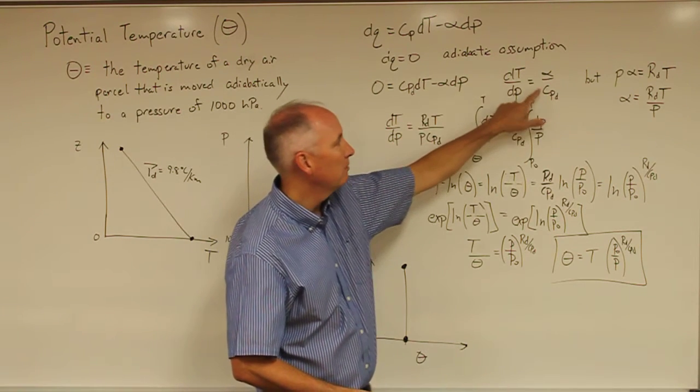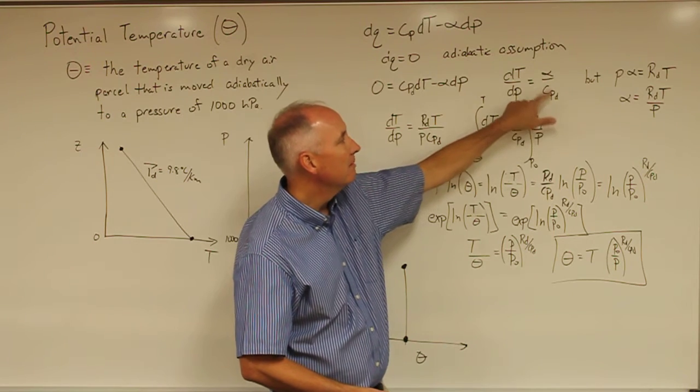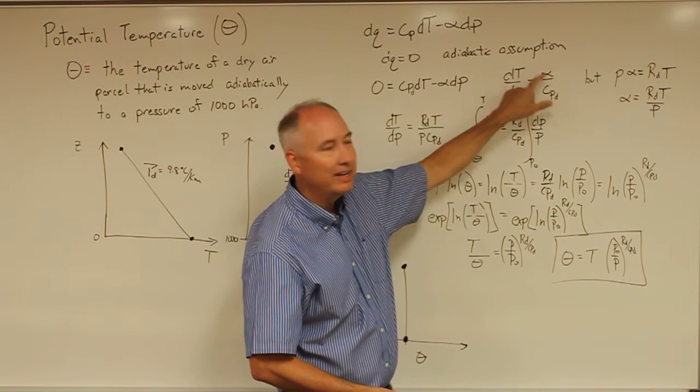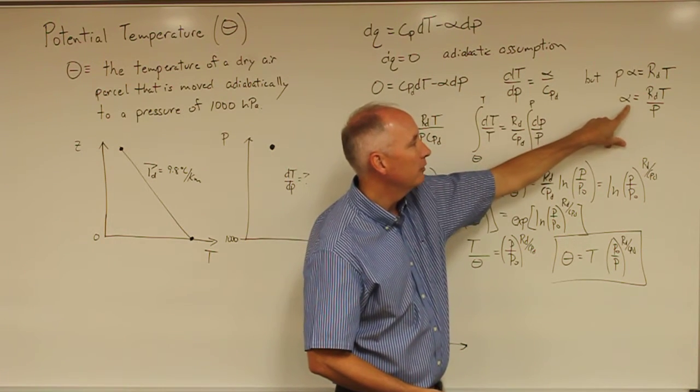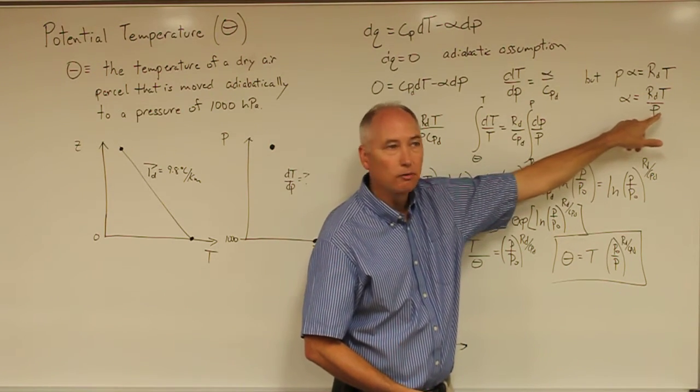You'll end up with alpha over C sub PD. But we know from the ideal gas law that alpha is also equal to R sub D T over P.